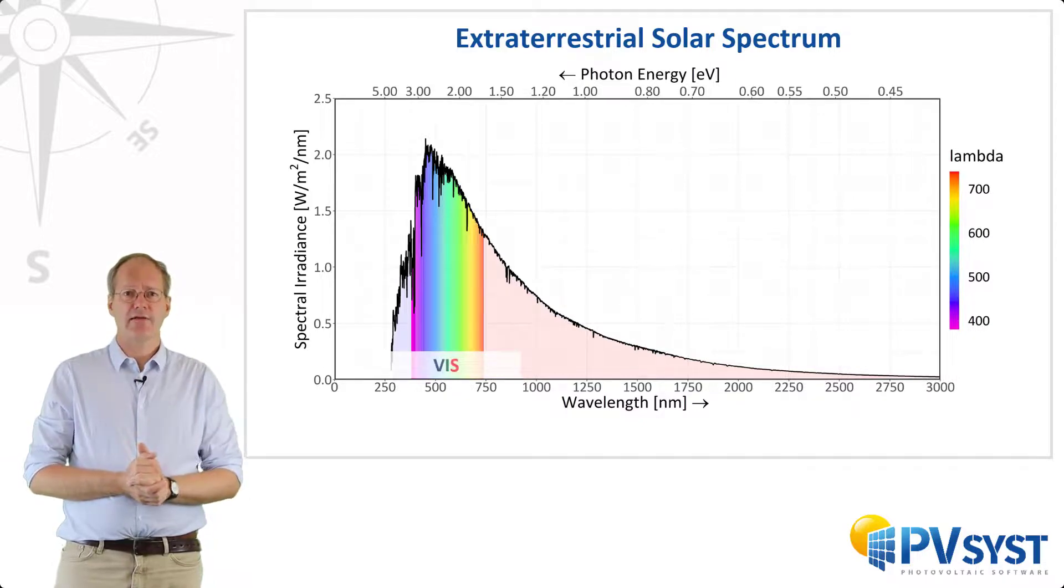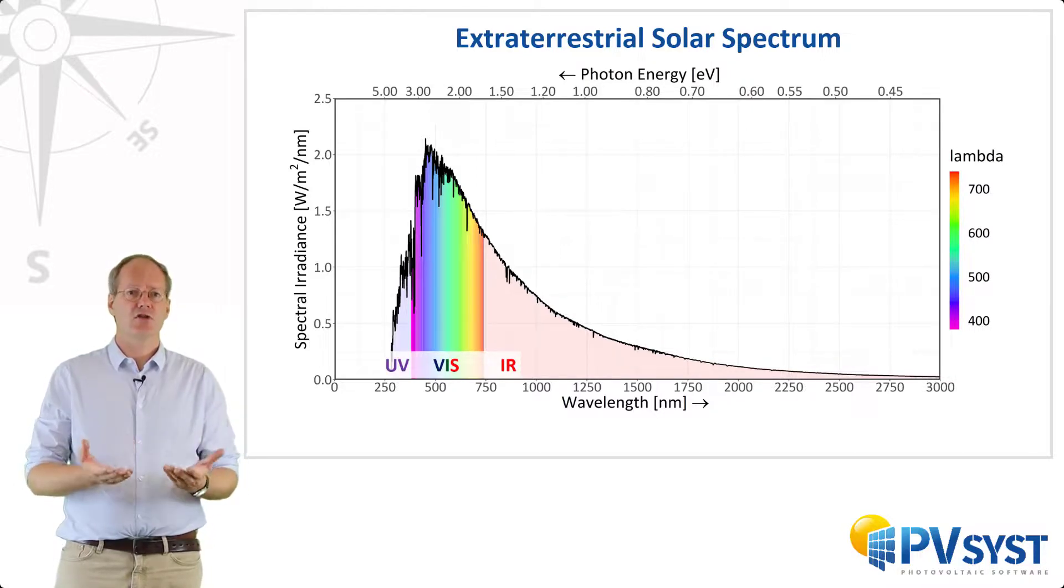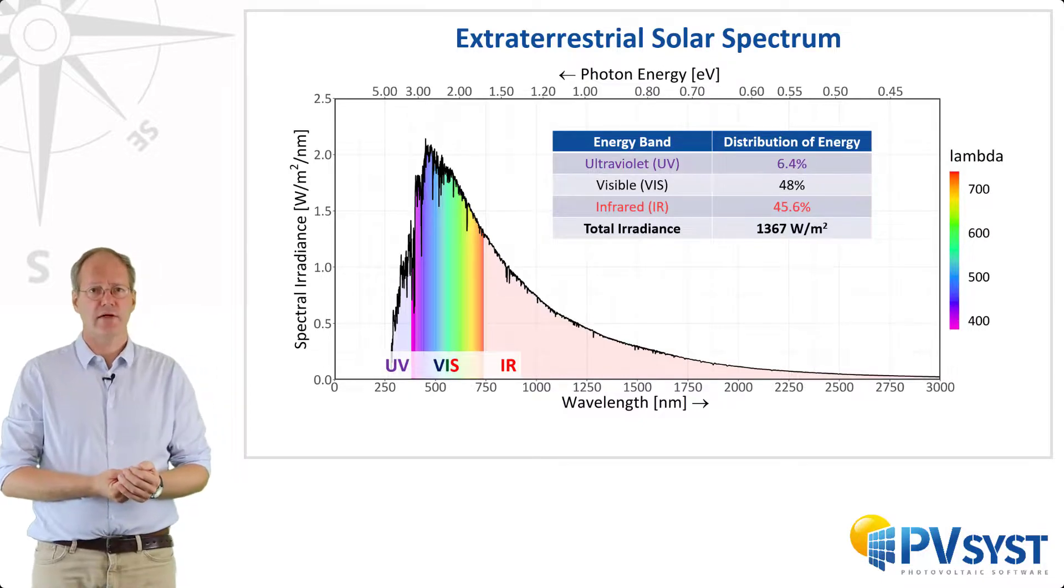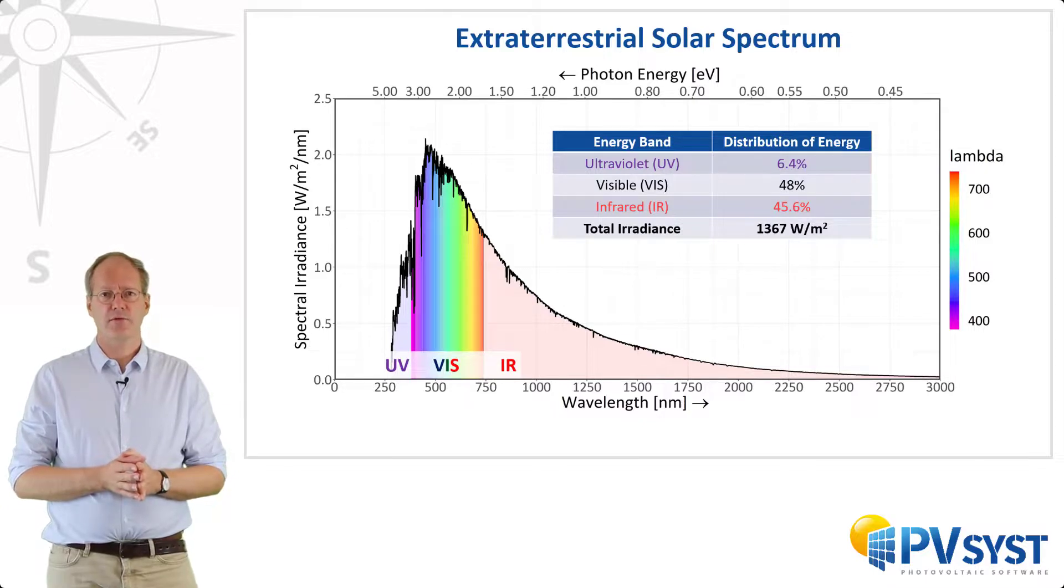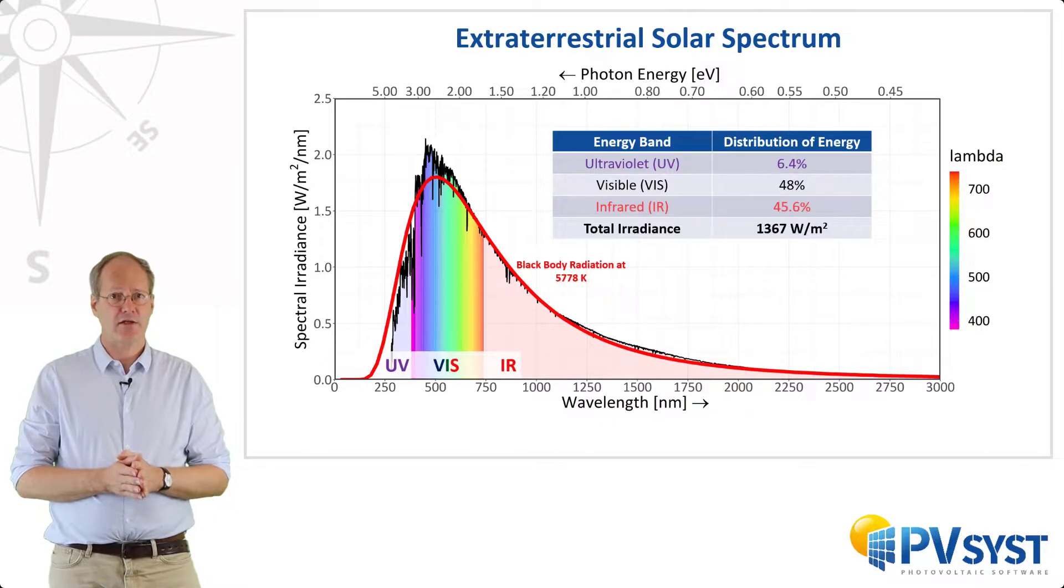You can see a large peak in the visible light spectrum as is shown by the rainbow gradient. There is also significant energy in the infrared, as well as a small contribution in the ultraviolet regions. These three energy bands show this distribution where the visible and infrared spectra make up equivalent contributions, and there is a very small contribution in the ultraviolet range. In total, the extraterrestrial irradiance is 1367 watts per square meter. Note that this energy distribution provided by the Sun is very close to the electromagnetic emission of a black body at a temperature of 5778 kelvins. This is described by Planck's law.